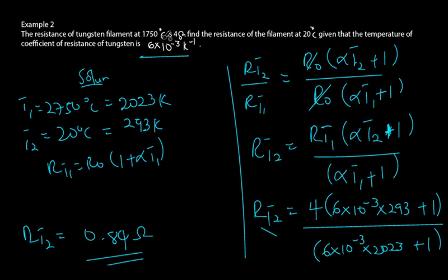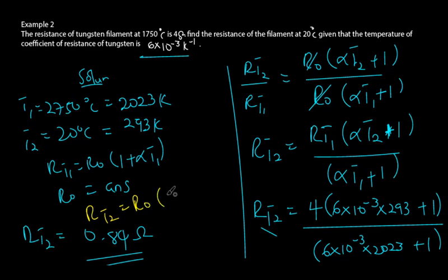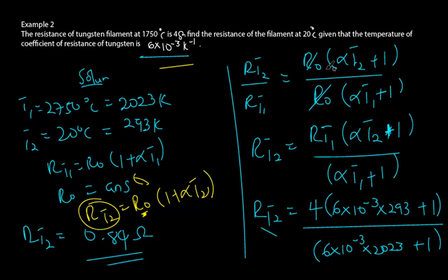Using the known values — R_t1 is 4 ohms, t₁ is 2023 Kelvin, and alpha is 6 × 10⁻³ — you can solve equation one for R₀. Once you have R₀, simply substitute it into the second equation: R_t2 equals R₀ times (1 + alpha·t₂), with t₂ being 293 Kelvin and alpha known. This gives you R_t2 directly.